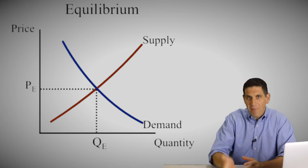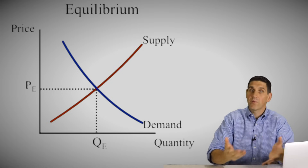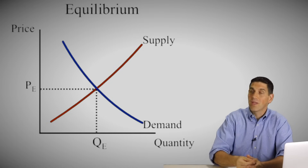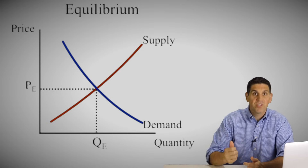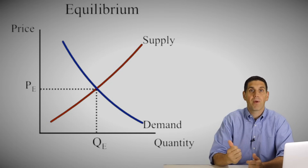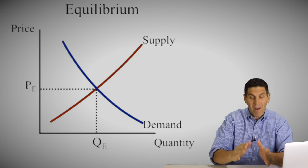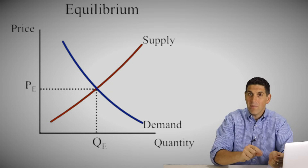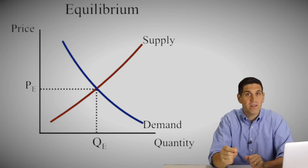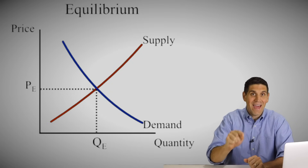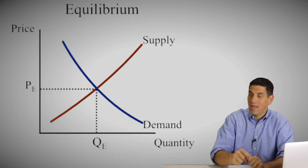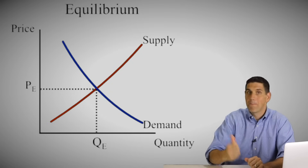When you take the demand curve and put it together with the supply curve, you get equilibrium, which is the market clearing price. That's the exact spot where the quantity demanded equals the quantity supplied at that exact price.